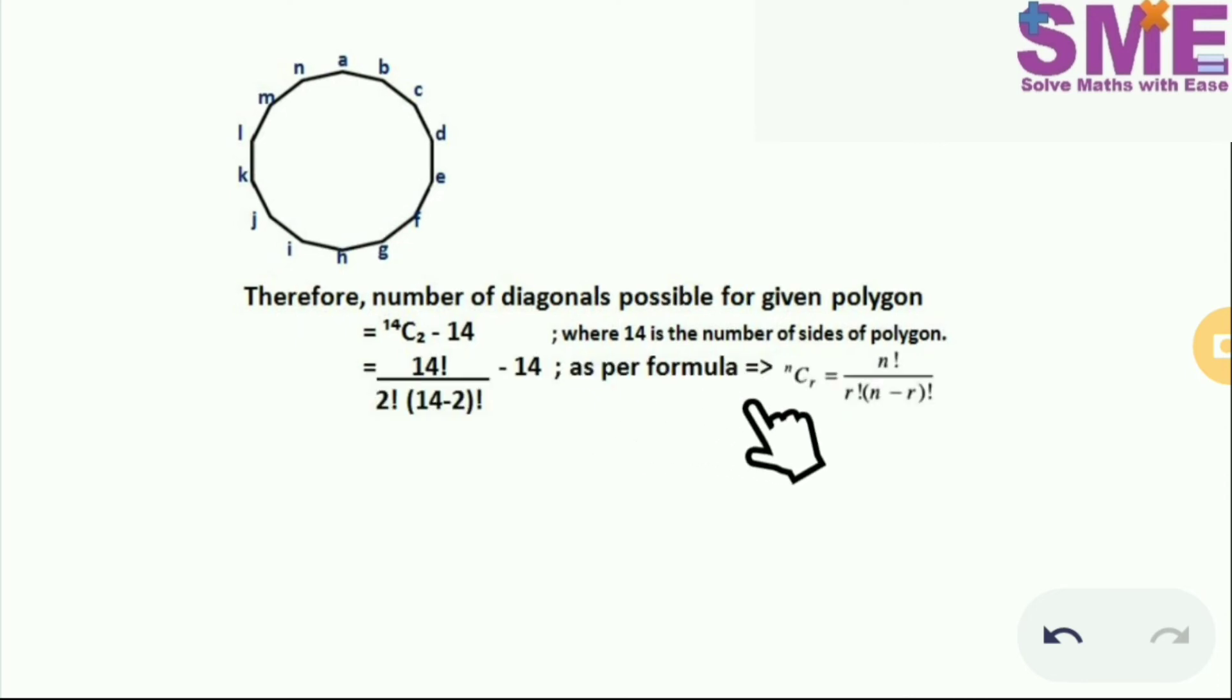Using the known formula, nCr is equal to n factorial divided by r factorial into n minus r factorial. We simplify 14C2 as 14 factorial upon 2 factorial into 14 minus 2 factorial minus 14.